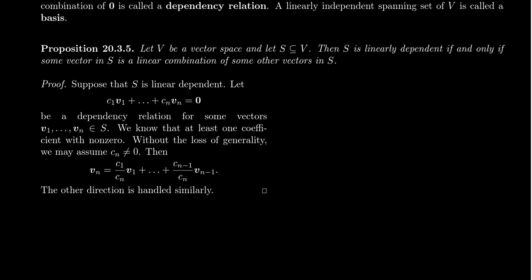Now I want to prove the following useful proposition about linearly independent sets. Given a vector space V and some subset S, we say that S is linearly dependent if and only if some vector in S is a linear combination of the other vectors in S. This is a very simple argument, but still worth mentioning here. Since it's an if-and-only-if statement, we'll go in both directions.